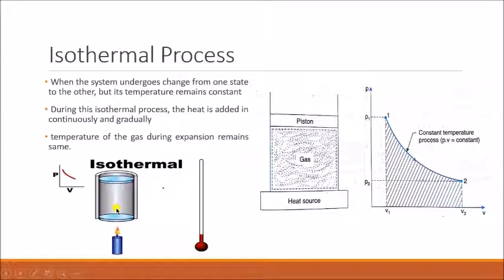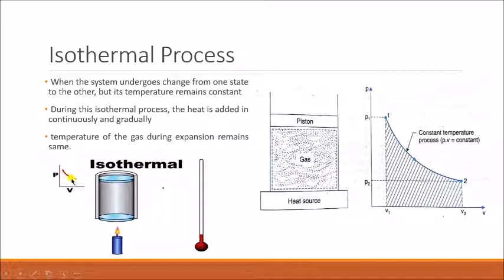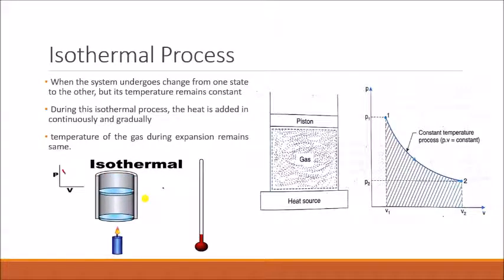In the animation you can see a thermometer measuring the temperature. As expansion takes place and the piston moves upward, the temperature remains the same. Simultaneously on the PV diagram, the curve comes downward — meaning the pressure is decreasing while the volume goes on increasing. During this process the temperature remains constant; only the pressure and volume change.